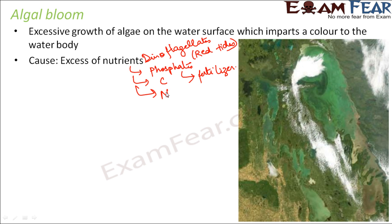Algal blooms need a lot of nutrients in the form of phosphates, carbon, or nitrogen. They also need sunlight and slow-moving water. If the water is continuously moving very fast, the formation of algal bloom does not happen properly. These are some of the factors required for the formation of algal bloom.